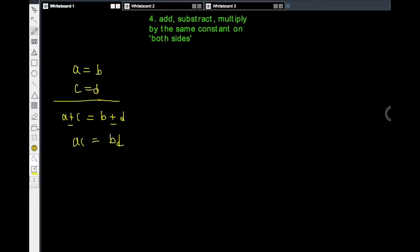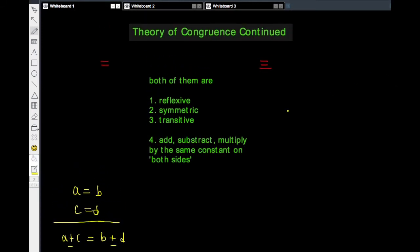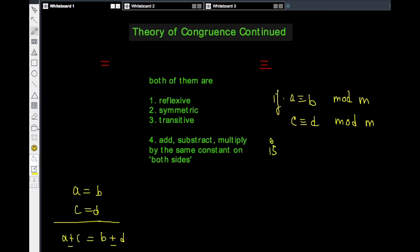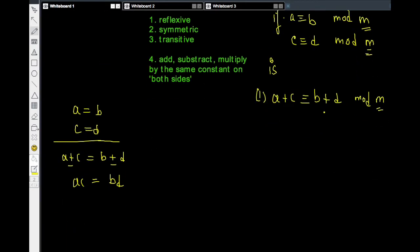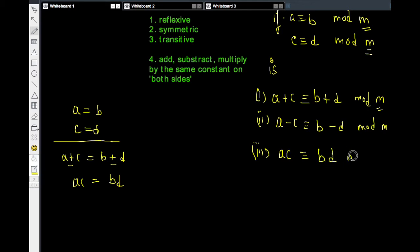Now will these things work when we work with congruency? That is, if a is congruent to b modulo m and c is congruent to d modulo m, can we say: (1) a plus c congruent to b plus d mod m — always remember the scale must be the same; (2) a minus c congruent to b minus d mod m; and (3) a times c congruent to b times d modulo m?